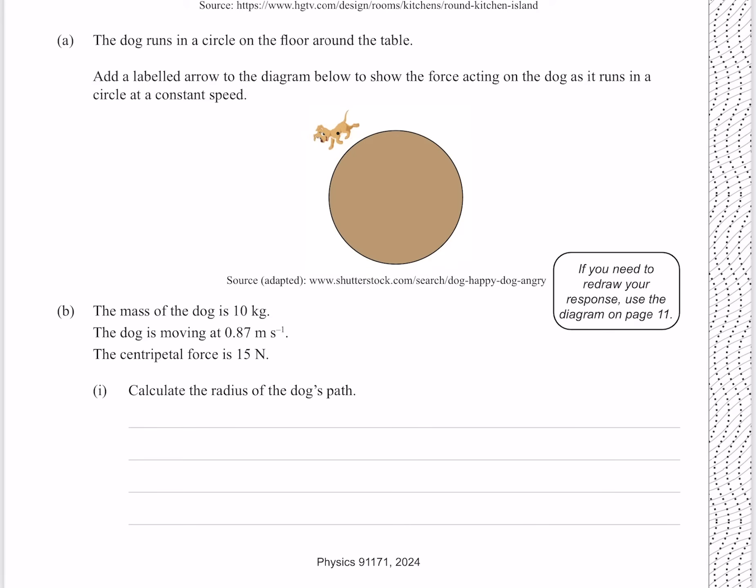Add a labeled arrow to the diagram below to show the force acting on the dog as it runs in a circle at a constant speed. Because the dog is running in a circle, it must be experiencing a centripetal force which is towards the center of the circle.